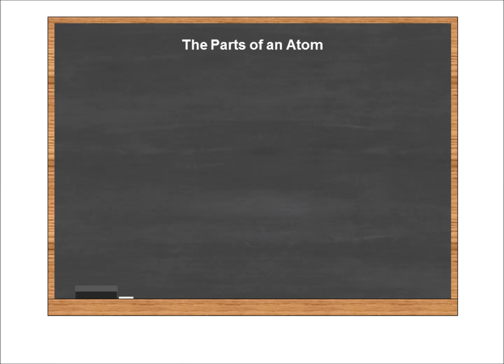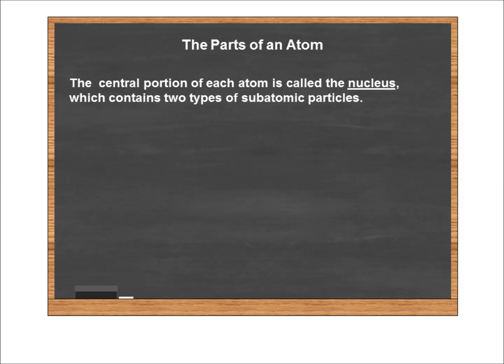Let's take a look at the parts of an atom in general, because all atoms have the same basic structure. In the center of every atom is what's called the nucleus. The nucleus is the core of the atom, and it contains two types of subatomic particles.